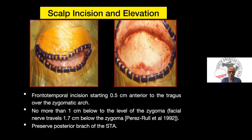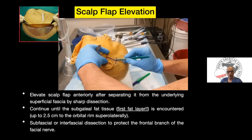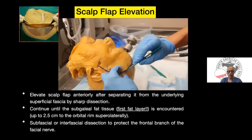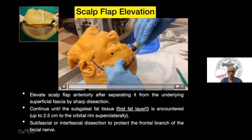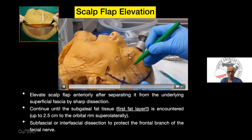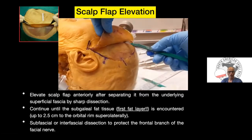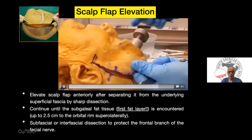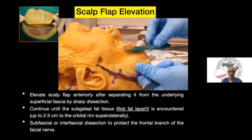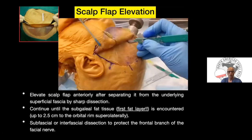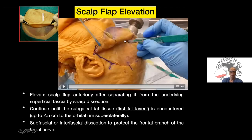We recommend preserving the posterior branch of the STA at least during exposure for scalp healing and in case you need it for vascular reconstruction. We elevate the scalp flap all the way up to approximately two-finger breadths — about two to two and a half centimeters — from the anterior angle of the superorbital bar. When you start seeing the subgaleal fat, which is the first fat layer, you should stop the scalp flap elevation. Going beyond this point risks injury to the branches of the facial nerve.